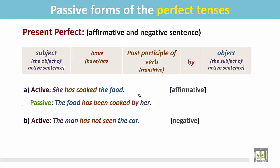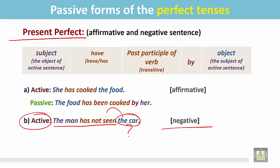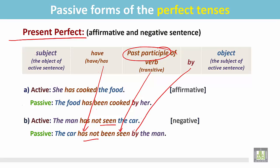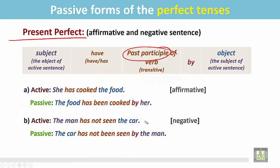Another example: 'The man has not seen the car.' This active sentence is a statement in the negative in the present perfect tense. The man has not seen what? 'The car' is the object of the verb 'seen.' In the passive sentence, the object becomes the subject: 'The car.' It is singular, so we use 'has', then 'not', then 'been seen', preposition 'by', and the subject becomes the object: 'the man.' So the passive form is: 'The car has not been seen by the man' — still in the negative as a statement.